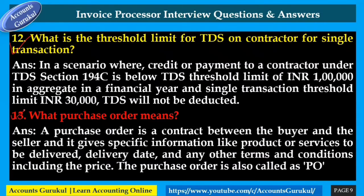What does a purchase order mean? A purchase order is a contract between the buyer and the seller, and it contains specific information like the product or services to be delivered, delivery date, and any other terms and conditions including the price. The purchase order is also called a PO.